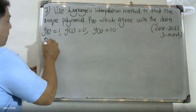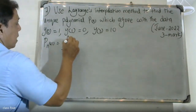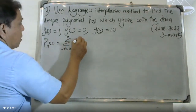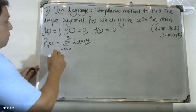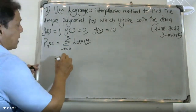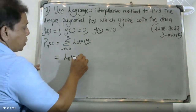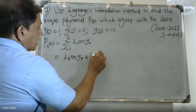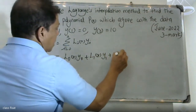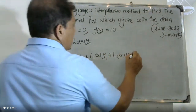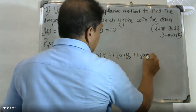To find P(x), the formula is P(x) = sigma i equal to 0 to n of L_i(x). That gives us L0(x)·y0 plus L1(x)·y1 plus L2(x)·y2, and so on.